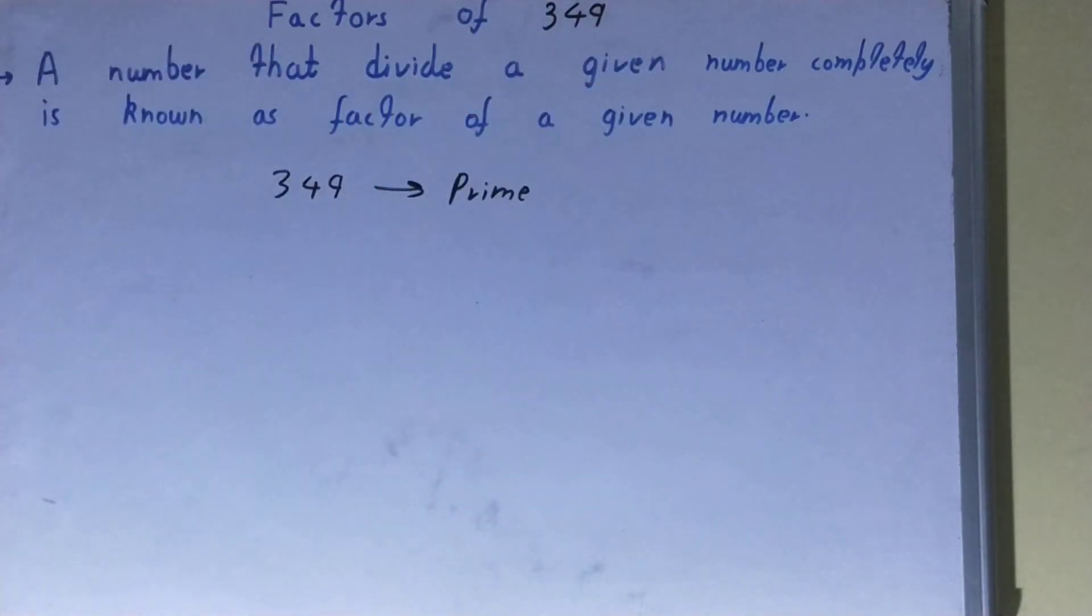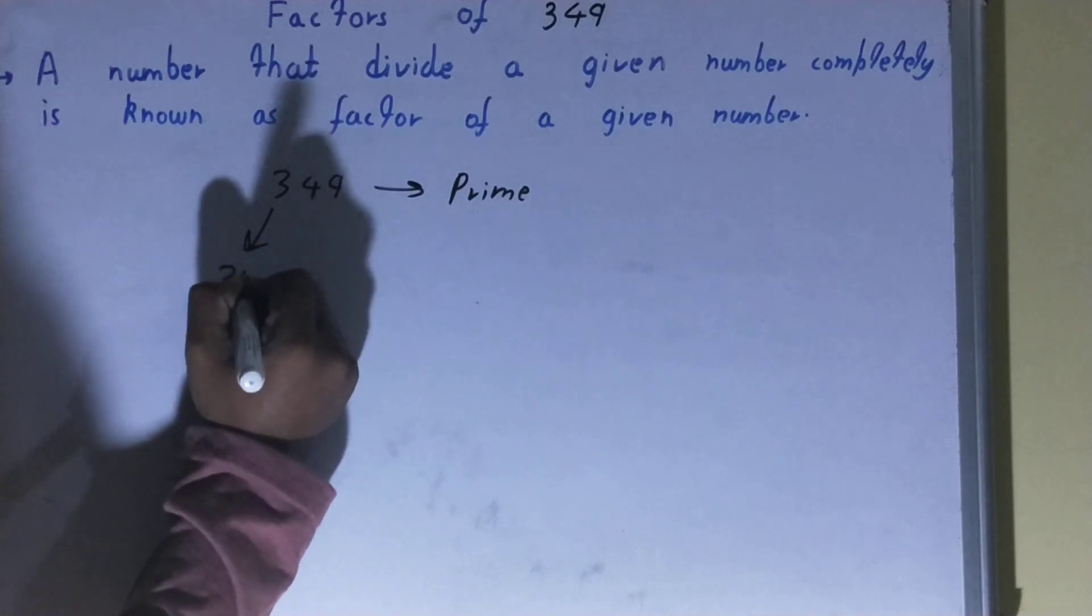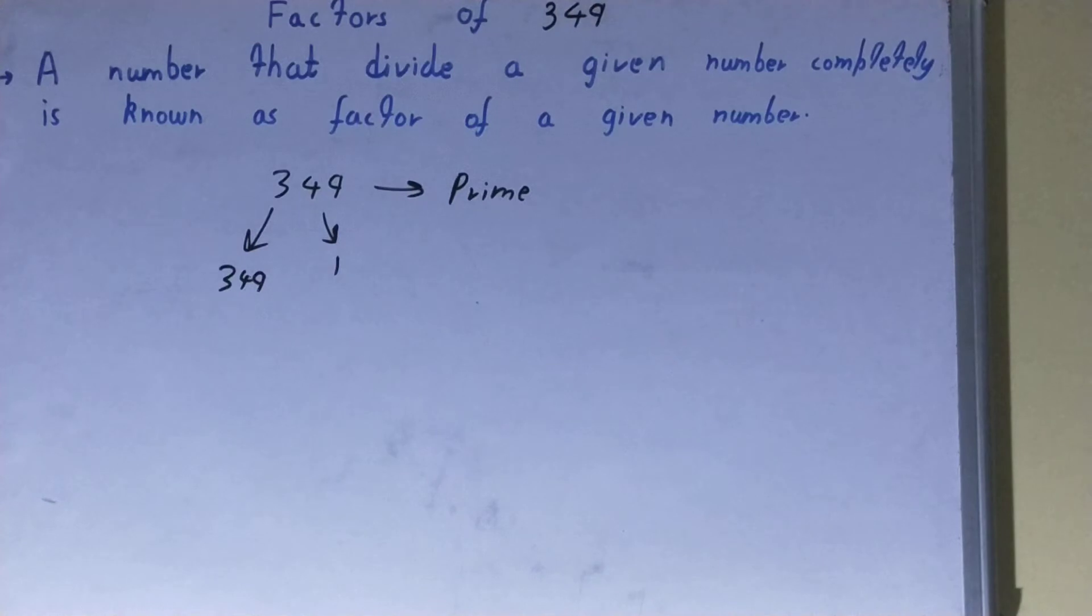And your prime number has a specialty that they are divisible by themselves and one only. And because the number 349 is prime, it also has that specialty that it is divisible by itself, that is 349, and one. And no other number can divide 349.